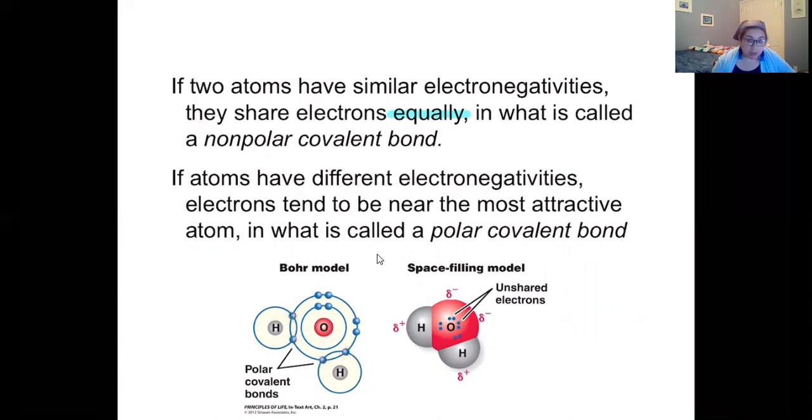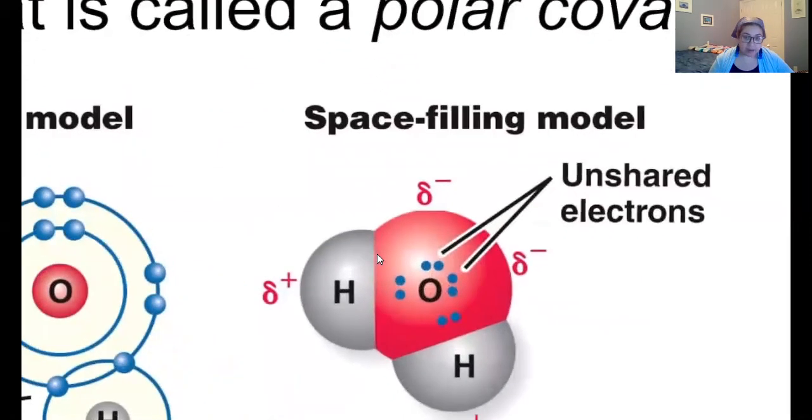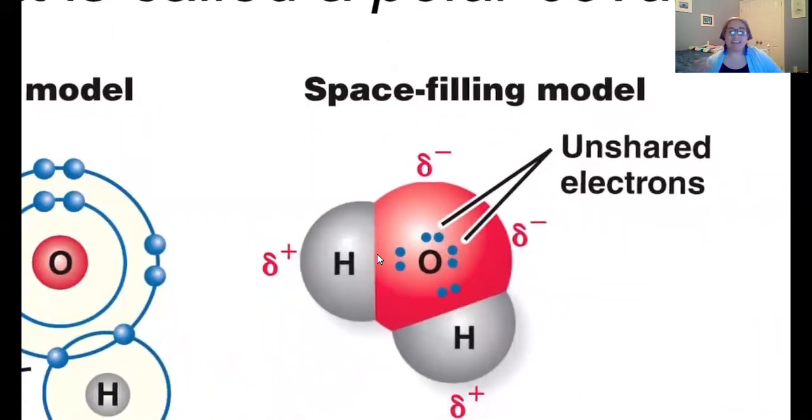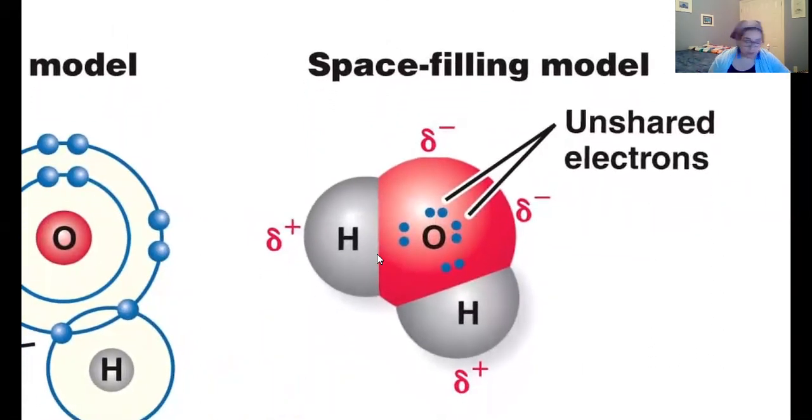What's happening is the electrons tend to hang out more with the oxygen and the result of that uneven sharing are slight charges. That's what this symbol is right here. It just means a slight charge. Your oxygen is slightly negative and the hydrogen is slightly positive because the electrons are being shared but it's not being shared equally.